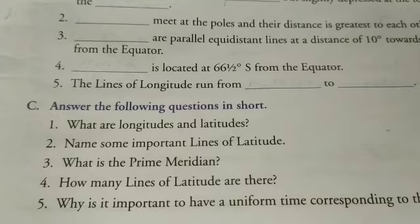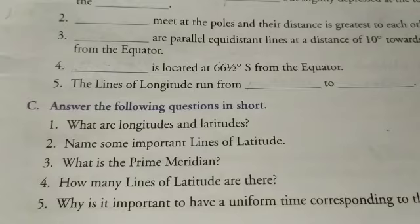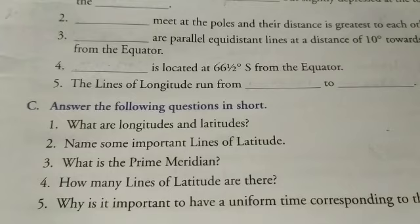I think you have completed. Now the next question — question number D. Question is on page number 20. Again I am repeating: How do we find the location of a place or a thing on earth? Question number 4, next line, write the answer.